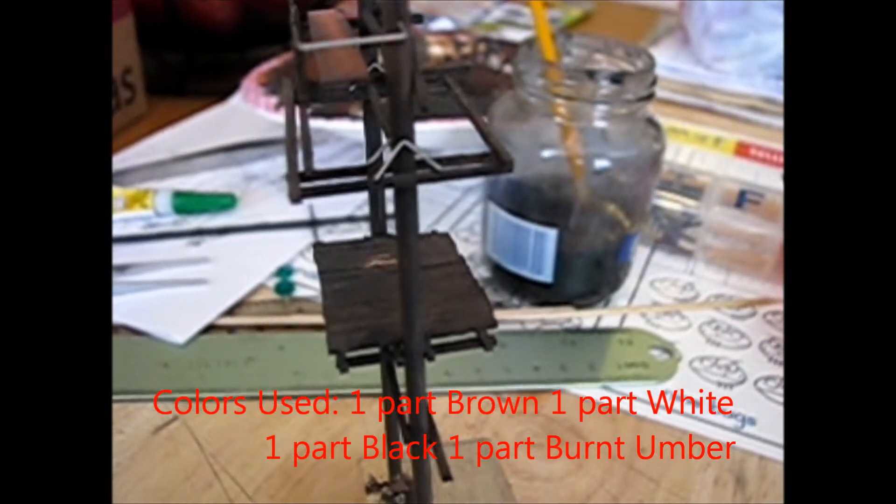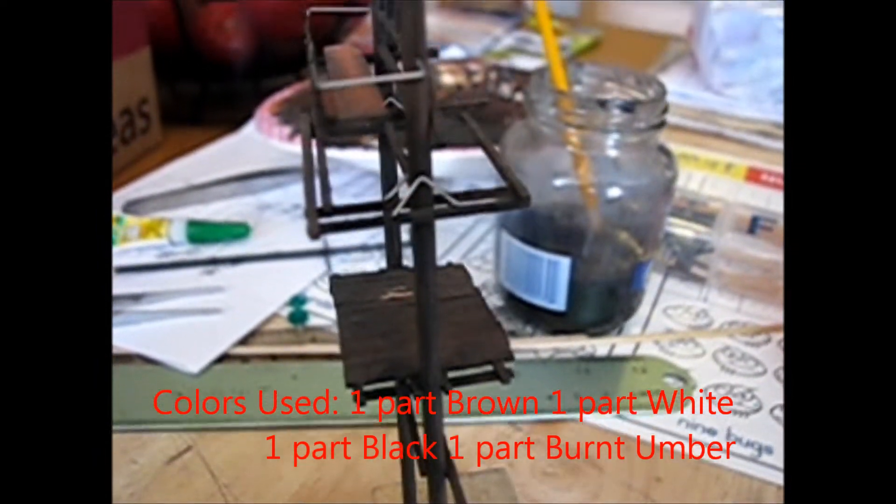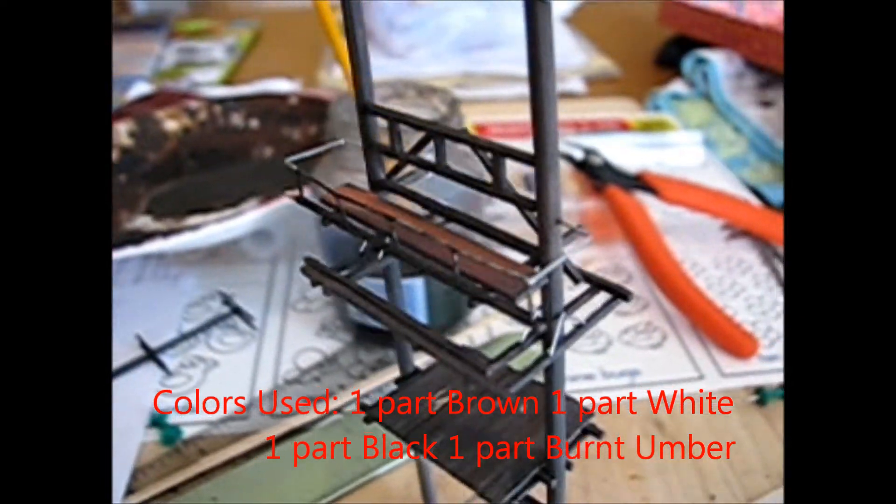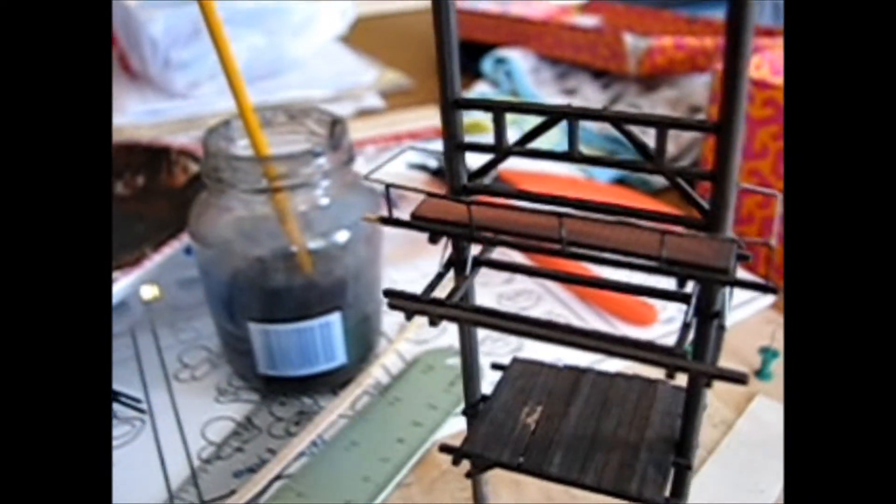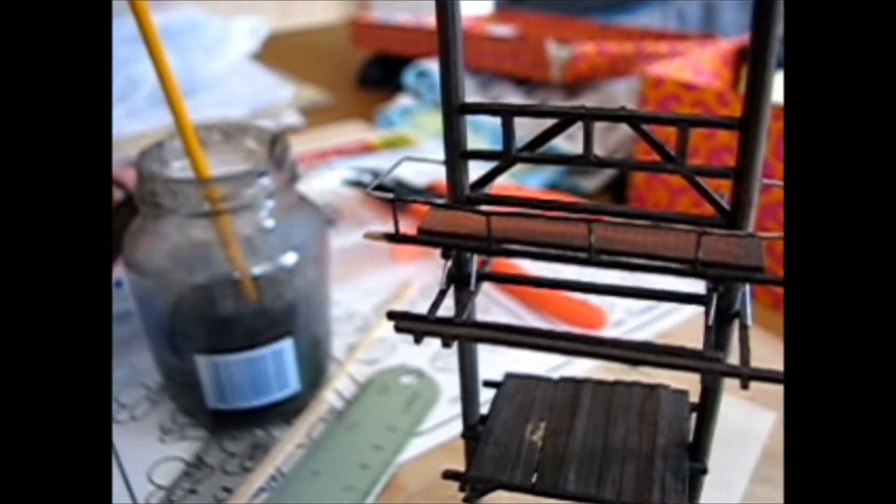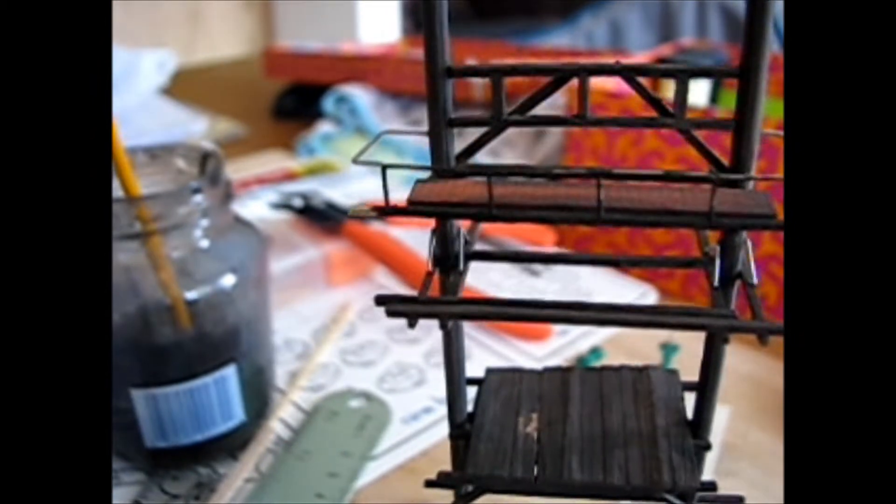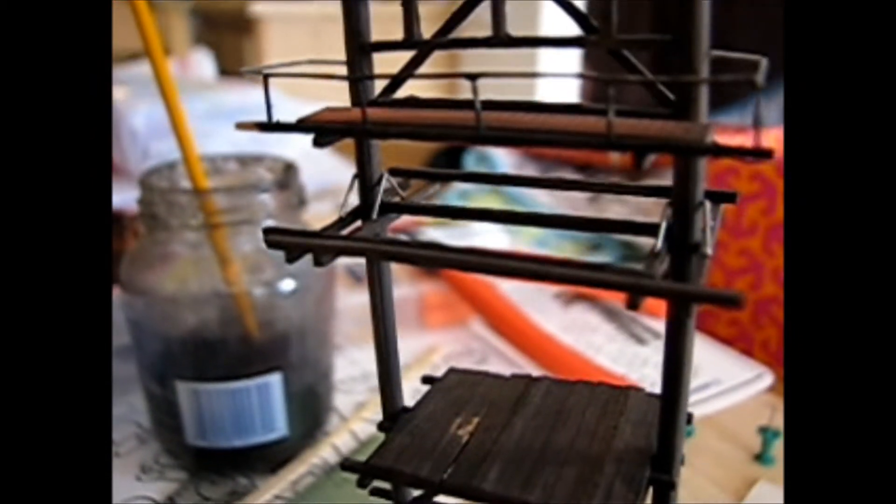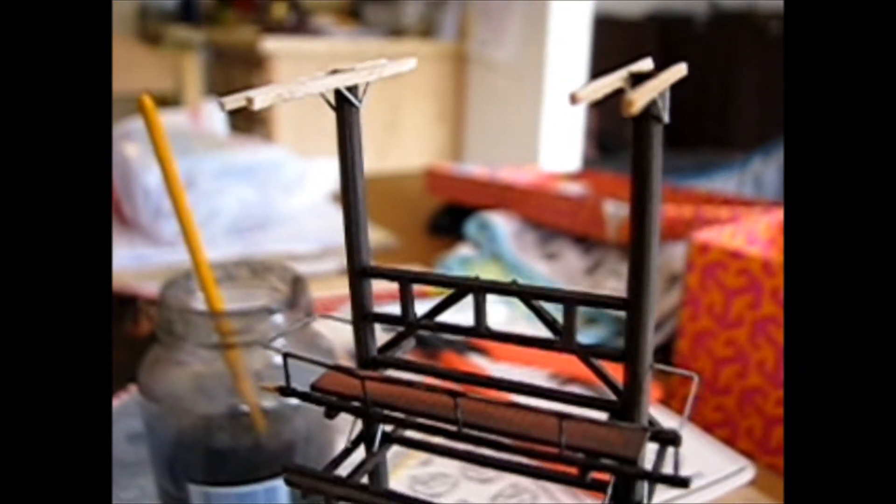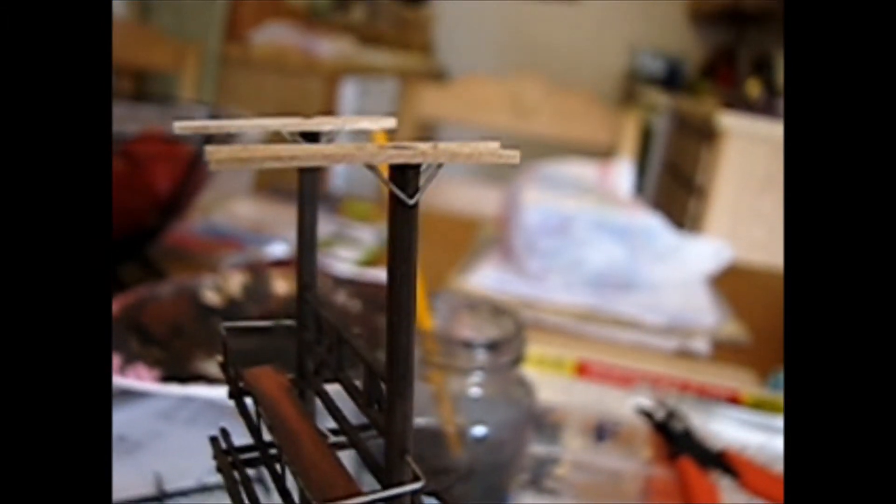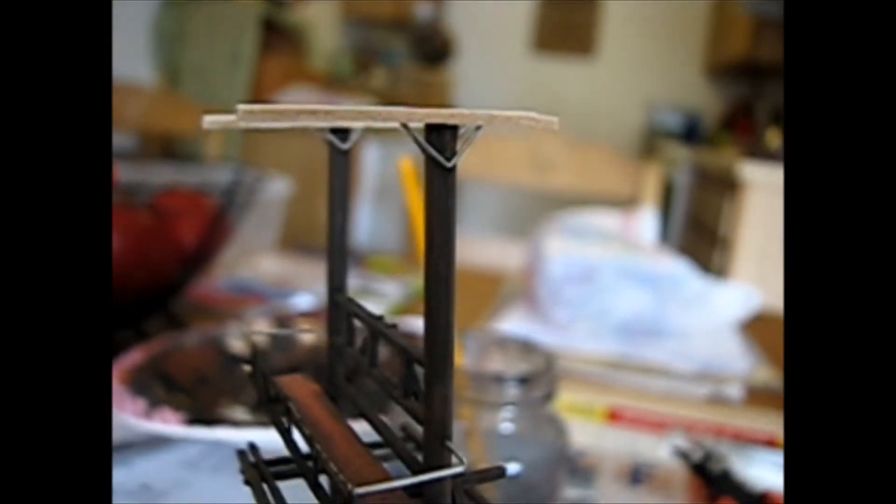You can see here that I'm starting to glue on the metal pieces and those are made from paper clips. Here's a railing here that I made from paper clips. You can see the railing, you can see the hangers, the metal hangers down there for the cross members. Those are made from paper clips. Nothing too difficult. And then of course up here we have the metal hangers for these high cross members.